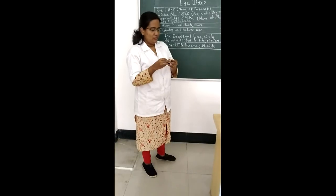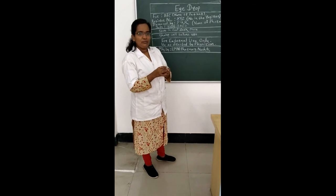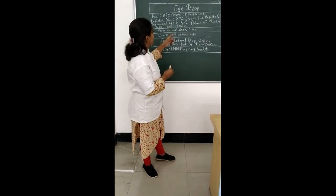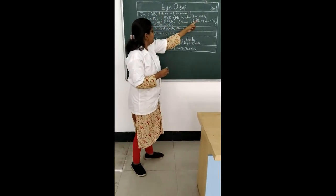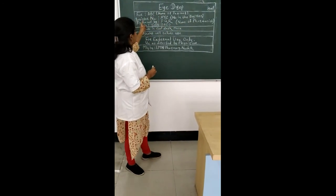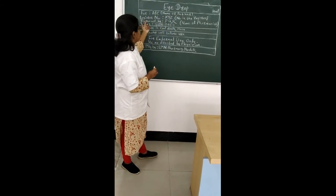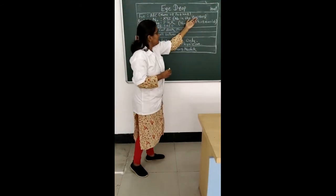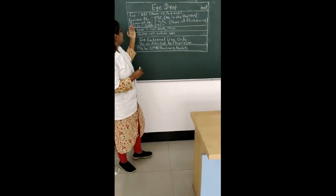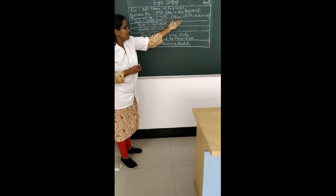Now let's move towards the labeling part. The label formulation: eye drops 10 ml. For patient ABC — name of patient — register number suppose XYZ, dispensed by PQR with the name of pharmacist, date September 2020.